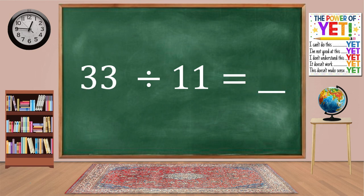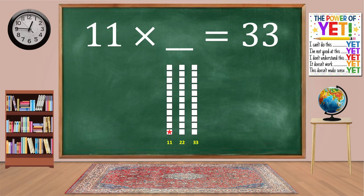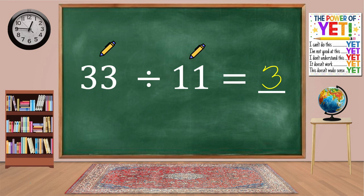33 divided by 11 equals blank. Our related fact is 11 times what equals 33. Skip count: 11, 22, 33. We have three columns. 11 times 3 equals 33. 33 divided by 11 equals 3.